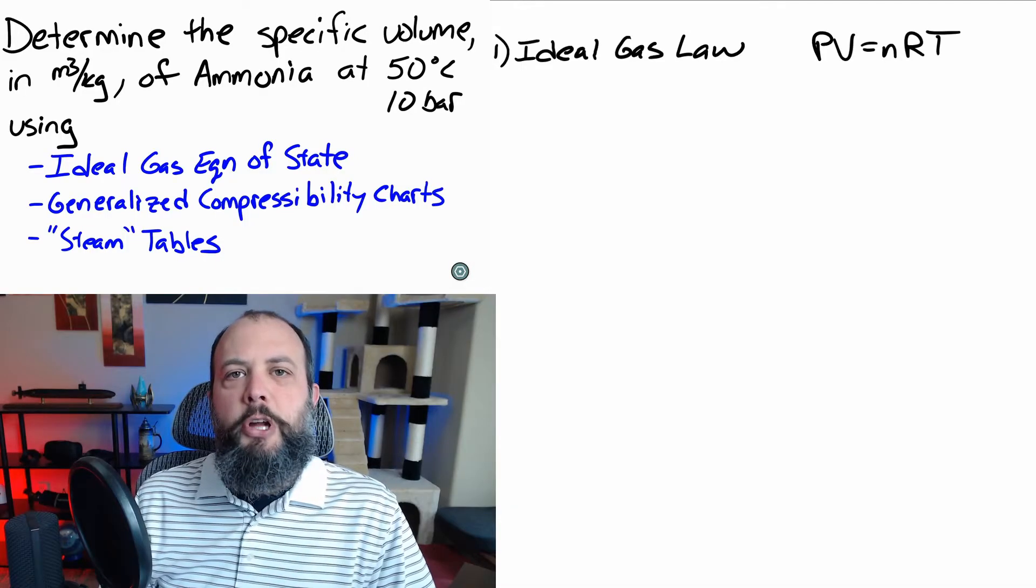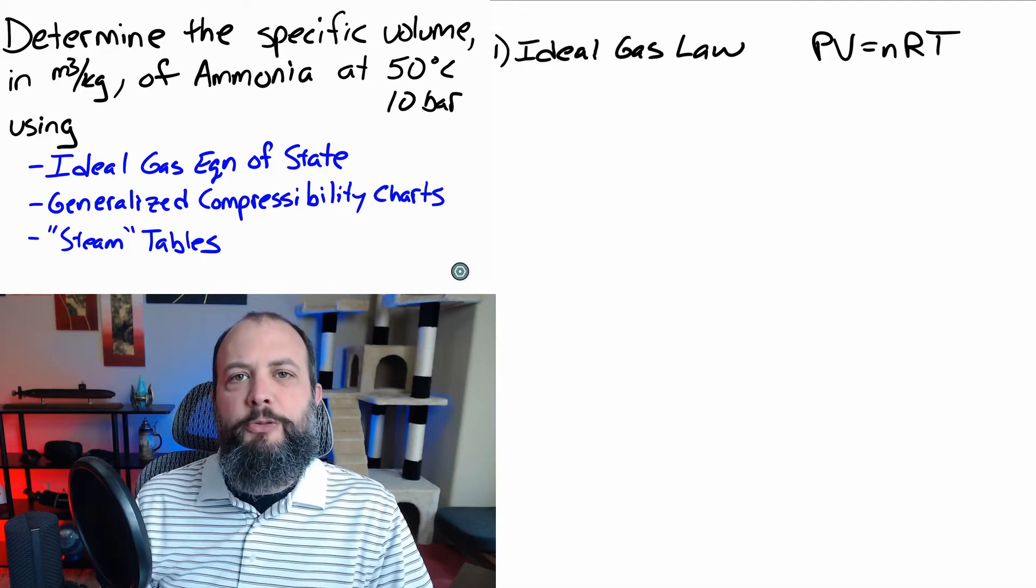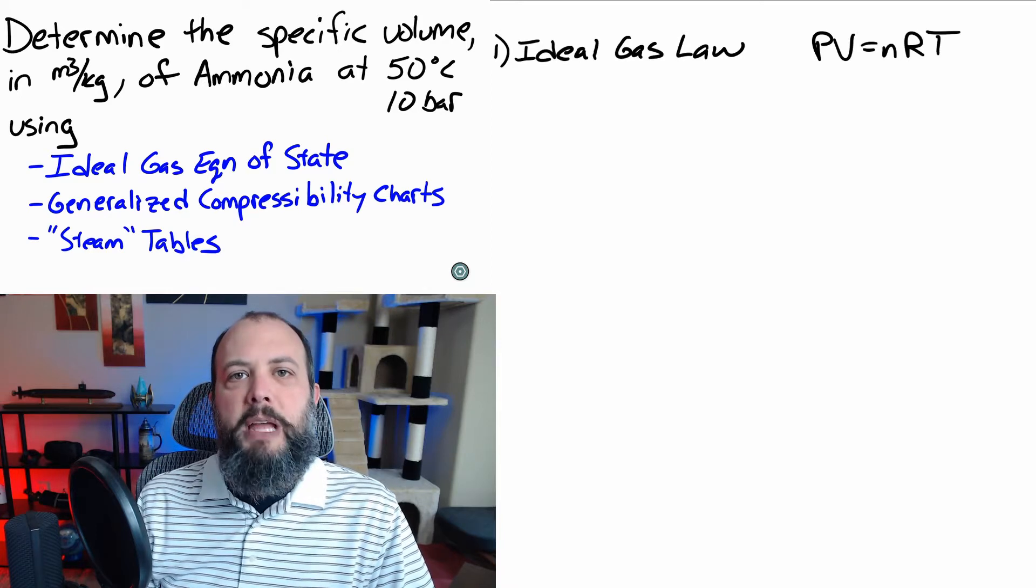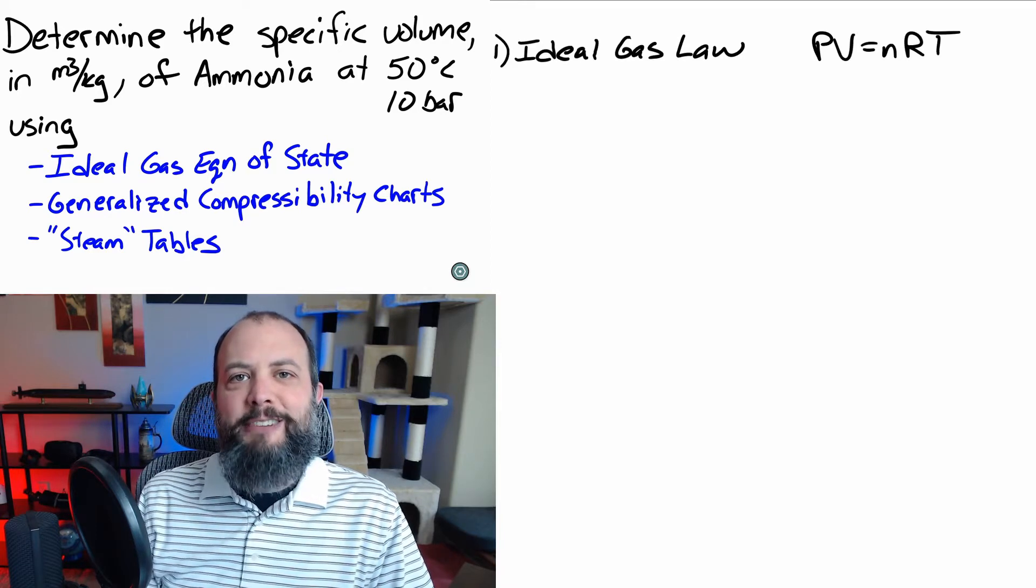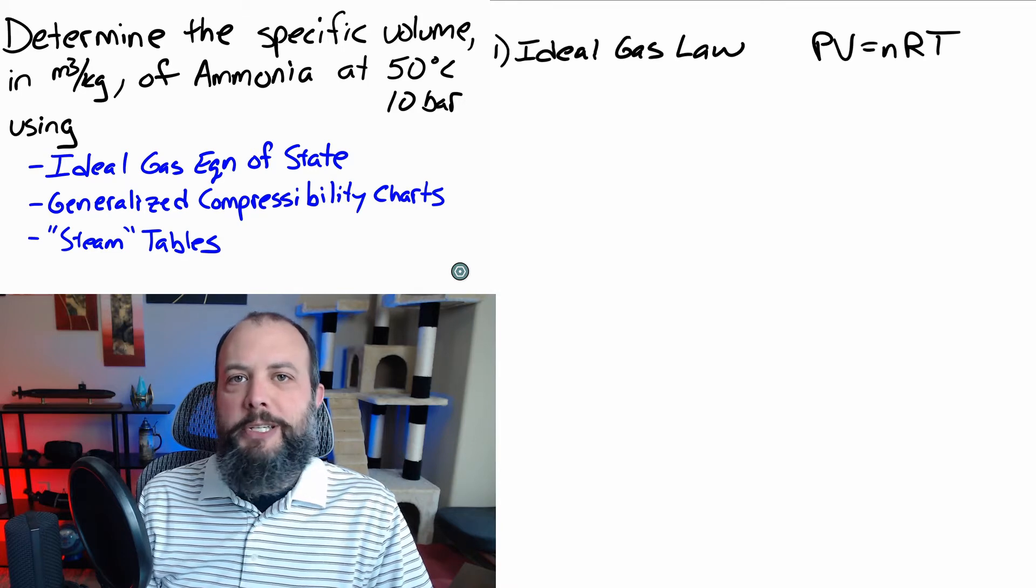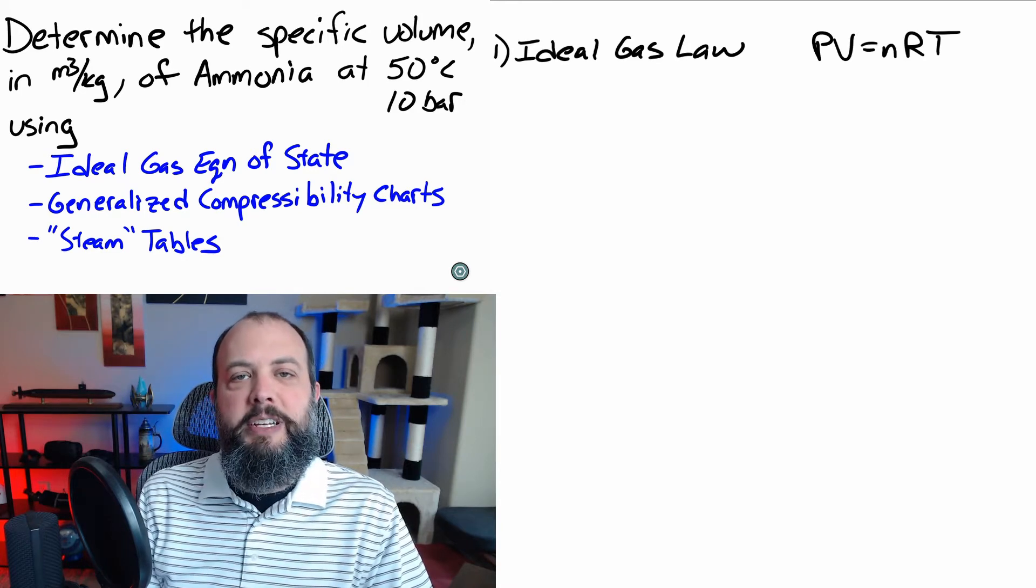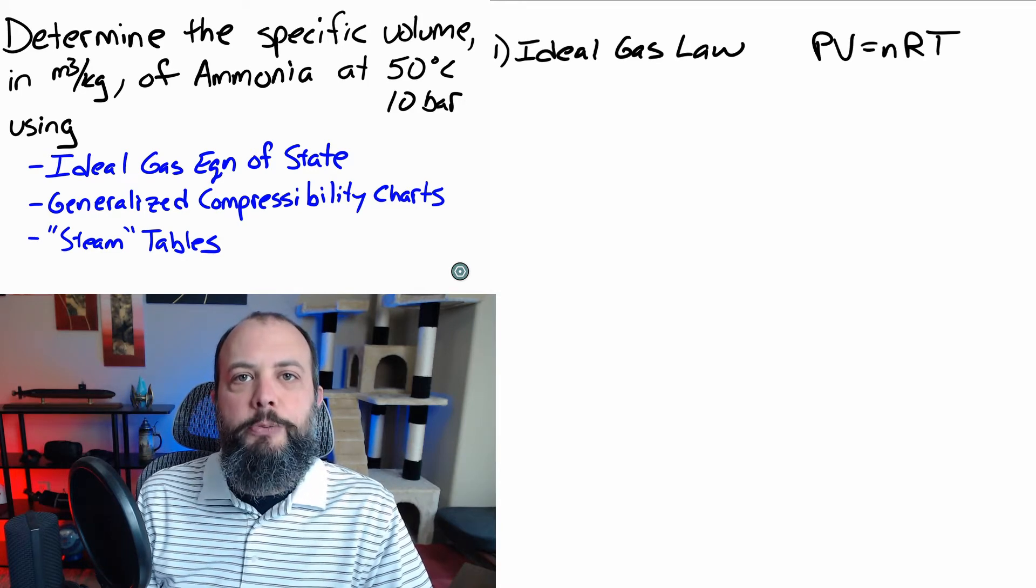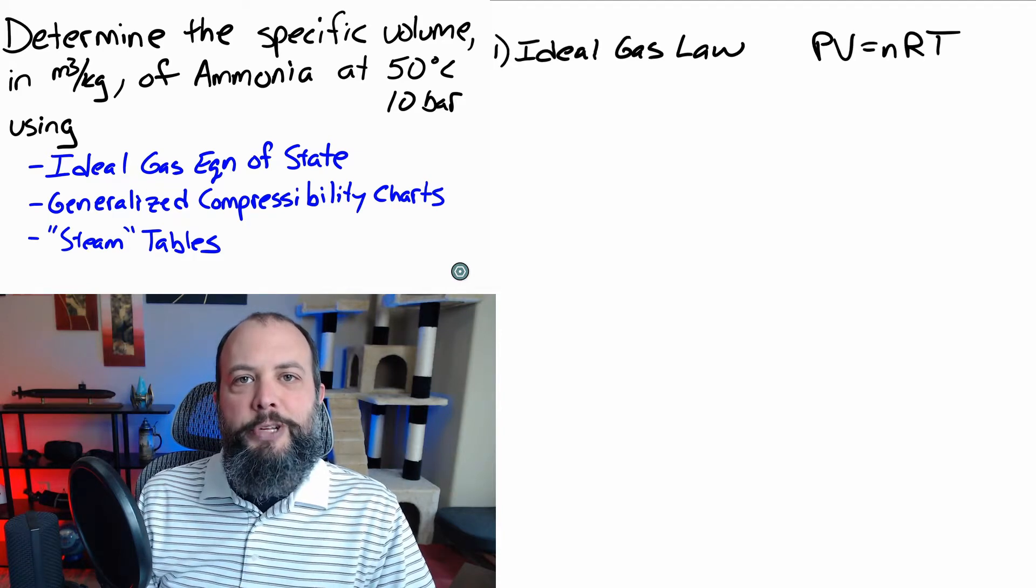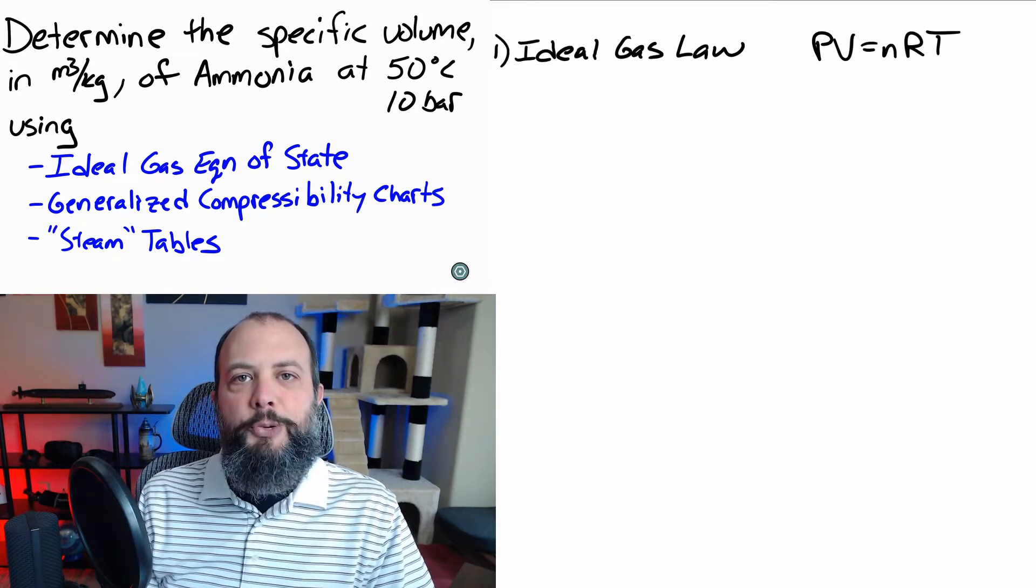For this ammonia problem, we'll start with the ideal gas law. PV equals NRT is the version you'll remember from chemistry class. But we actually have a lot of different versions of the ideal gas law based on what units you have, the difference between volume and specific volume, for example. And in this case, since we don't know the number of molecules we're dealing with, we actually want a different version.